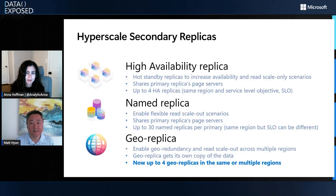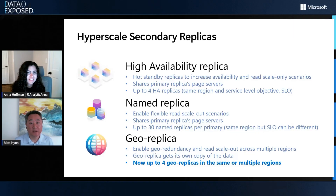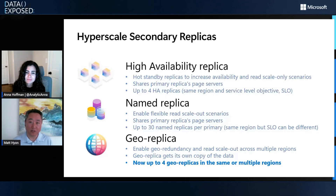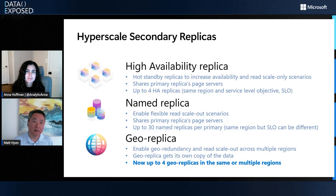A couple of questions on GeoReplicas: this is something new — multiple GeoReplicas in public preview, that's what you're announcing today. How is it different from failover groups? GeoReplicas do not have that endpoint redirection that failover groups have, so you would have to adjust your connection strings if you failover between GeoReplicas. Failover groups are actually built on top of GeoReplicas under the hood. With failover groups you get that extra convenience of endpoint redirection and the ability to fail over multiple sets of databases together as a group, which doesn't happen with GeoReplicas on their own.